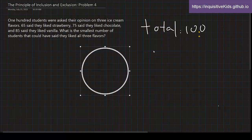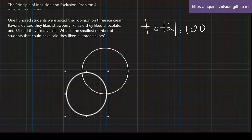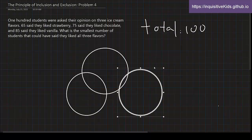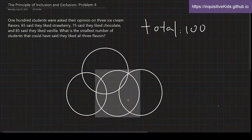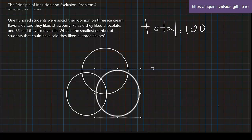And it doesn't give us lots of information. It just says that 75 said that they liked chocolate, 65 said that they liked strawberry, and 85 said that they liked vanilla.